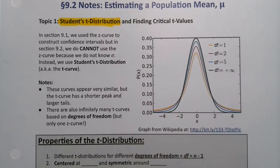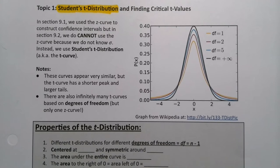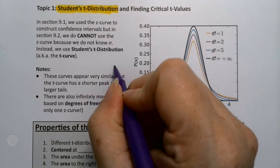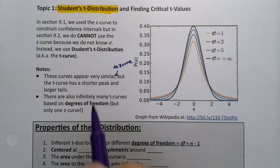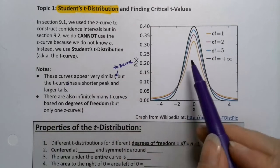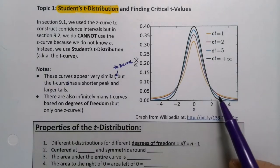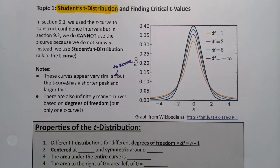The t curves are very similar to the z curve, but the t curves have a shorter peak and larger tails. See how the tails over here are above that black curve right there?